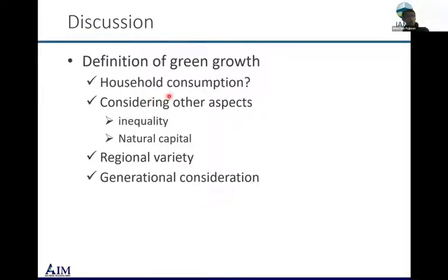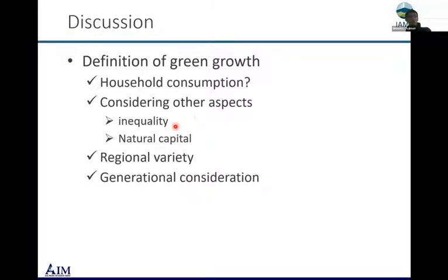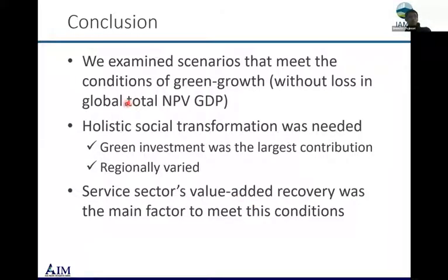Several caveats remain: GDP is not a good welfare metric, so household consumption needs to be similarly discussed. We didn't consider inequality within countries or regions. Natural capital is not accounted for, and generational considerations are needed — the former period still has positive GDP loss while the latter period is offset or negative, representing an imbalance among generations. Thank you.